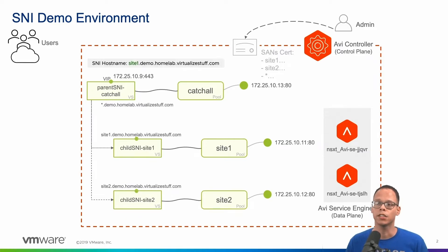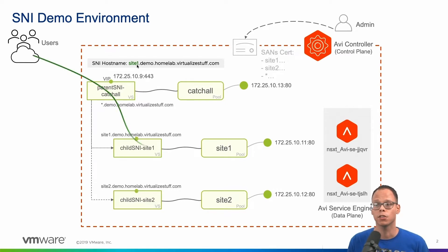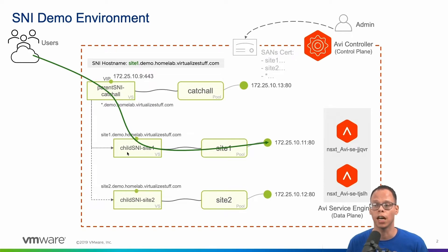Now let's say a user wants to request the site one URL. This traffic is going to be routed to the parent virtual service. The parent virtual service is going to do a lookup on the domain, it's going to see that we have a match since we configured our child virtual service for site one, and our traffic will be forwarded to the back-end servers.